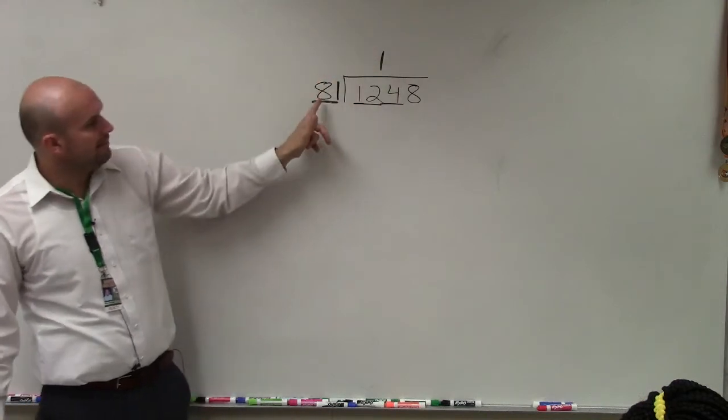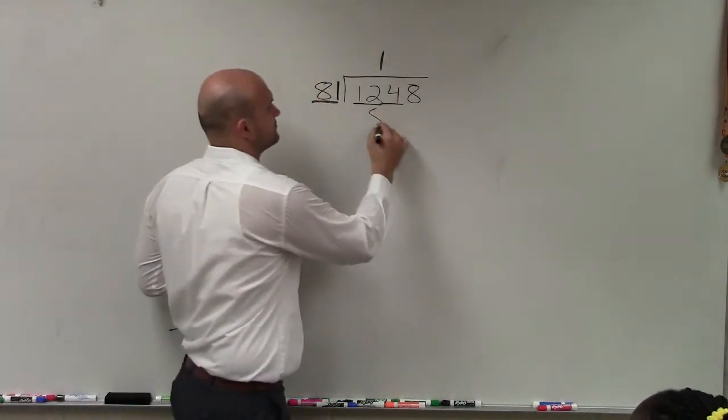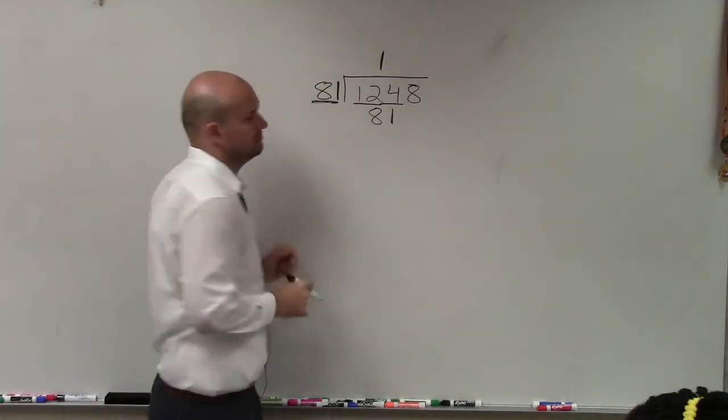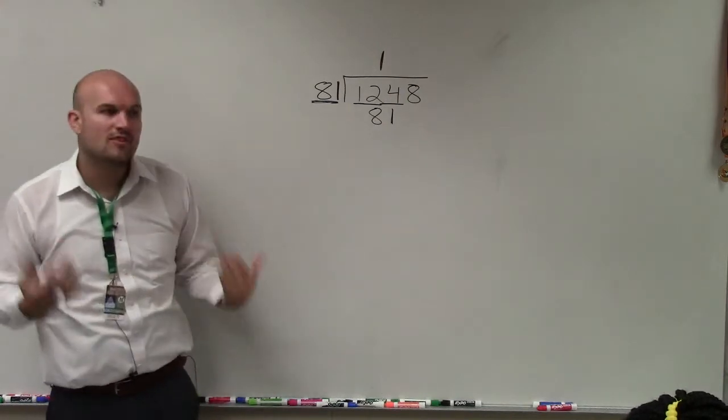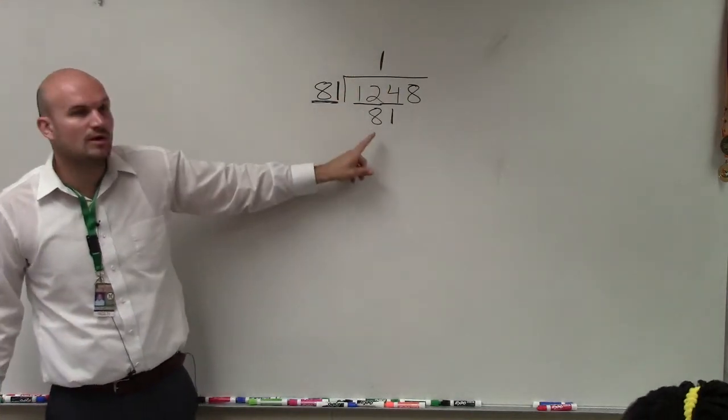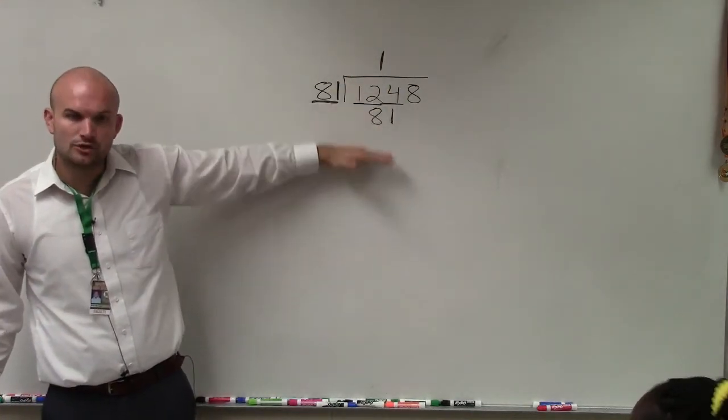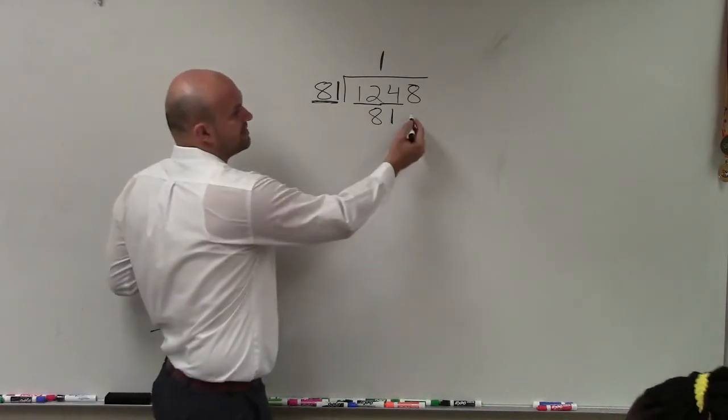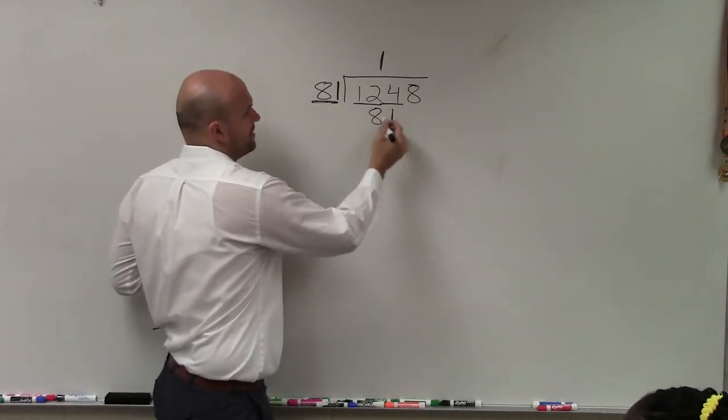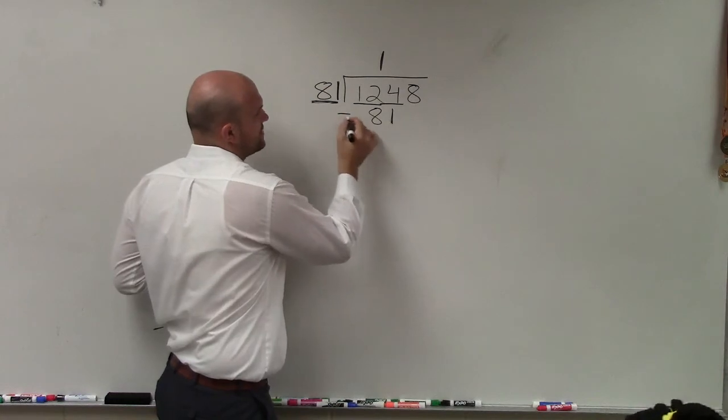Then you take 1 and multiply it by 81. Then, once you've taken 1 times 81, now you subtract your two rows. And if you want to put a 0, let's not worry about it. Let's just subtract your two rows.